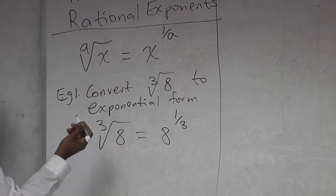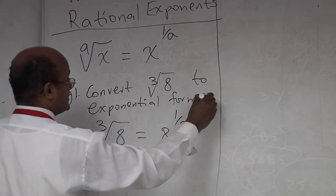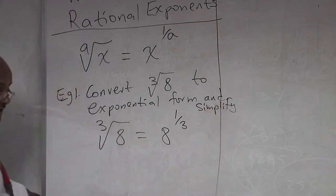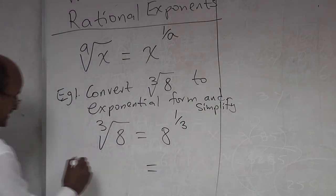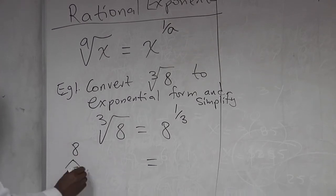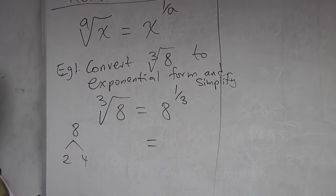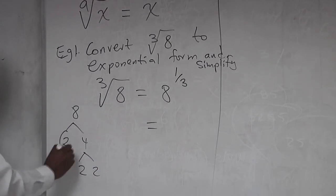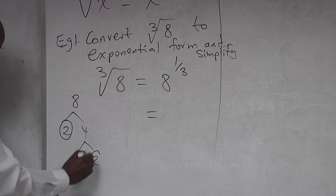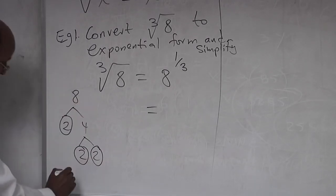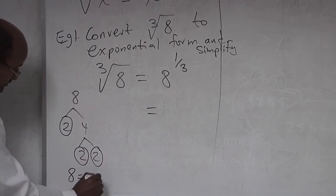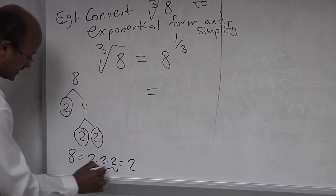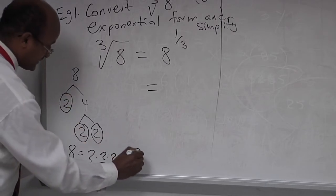If the problem says convert to exponential form and simplify, what does 8 mean? Applying prime factorization: 8 means 2 times 4, and 4 means 2 times 2. So applying prime factorization, 8 is the same as 2 times 2 times 2, which is 2 to the power of 3 — because you have three 2s.